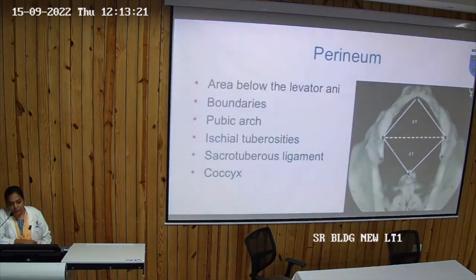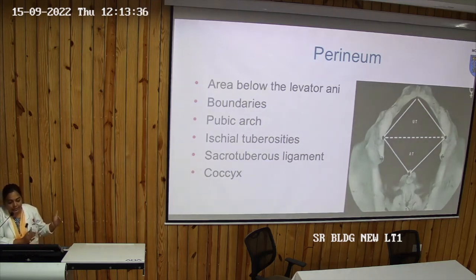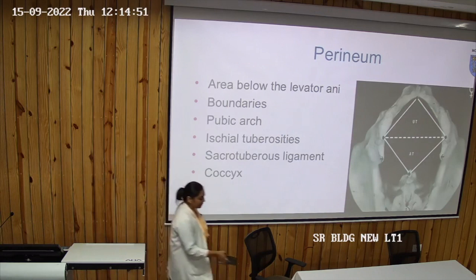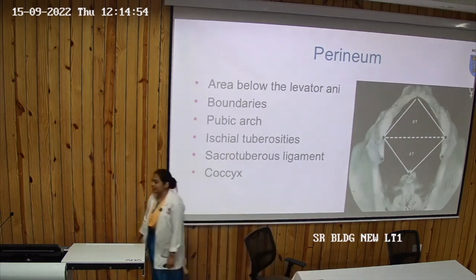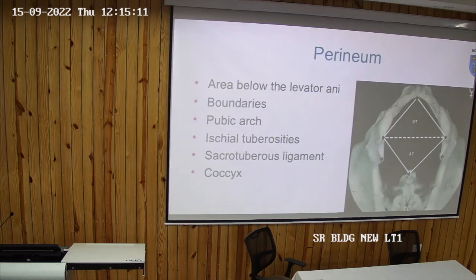The deeper boundaries: what are the structures bounding the perineum? Anteriorly, it is bounded by the pubic symphysis, or more specifically, the arcuate pubic ligament. Posteriorly, it is bounded by the coccyx. On the lateral side, from anterior to posterior: the ischiopubic rami, the ischial tuberosity, and the sacrotuberous ligament on both sides.